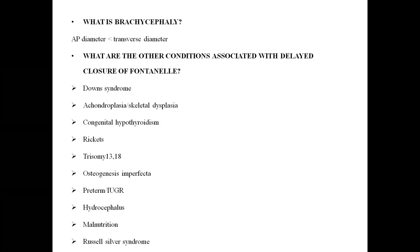Brachycephaly is when the anteroposterior diameter is less than the transverse diameter — opposite of dolichocephaly. Down syndrome children may have delayed closure of the fontanel; other conditions associated with delayed fontanel closure include skeletal dysplasias, hypothyroidism, and rickets. These are the commonly seen conditions.